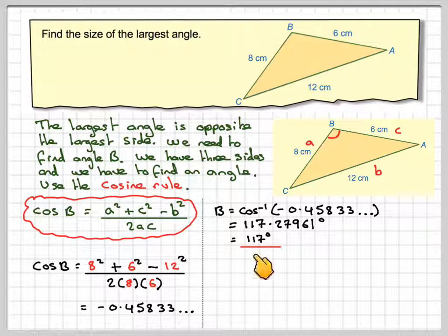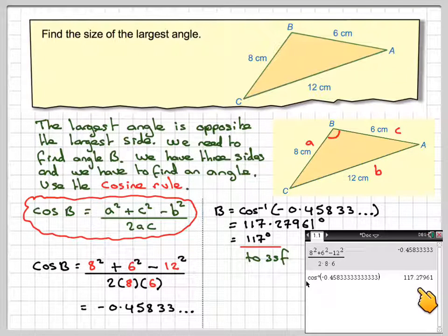Round that off, correct to three significant figures, it will be 117. And there is the final screenshot of what we actually did. Okay, so there's been a video here to show you how to find an angle using the cosine rule. And remember, in this case, there is absolutely no ambiguous case. Thank you for watching.